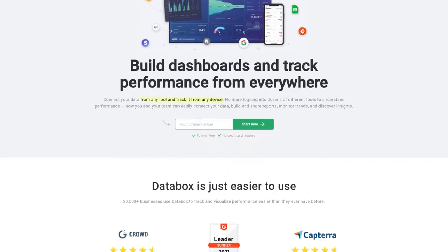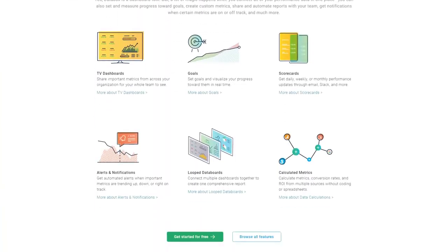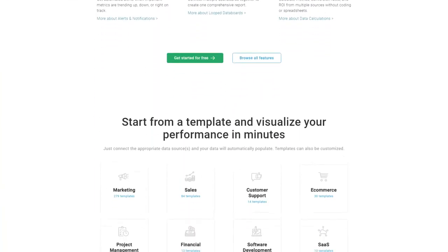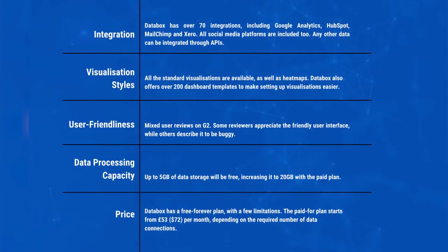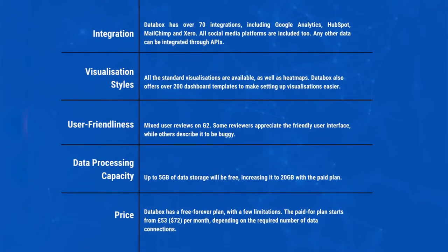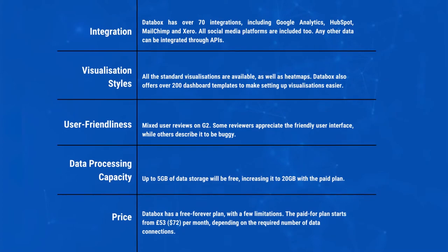Databox is popular with agencies and companies specializing in digital, with some of its customers including Crayon, Accuranger, and Tetra. Databox can deliver metrics using smartphones, Slack, and even Apple Watches to present data to companies and clients alike.